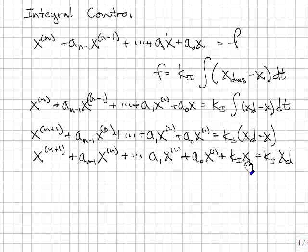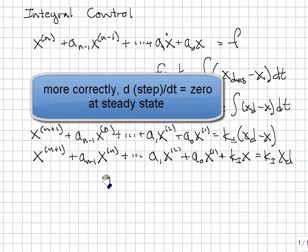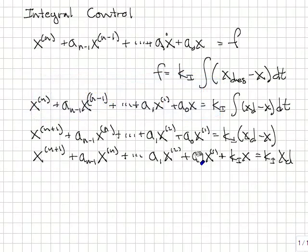Look what's happened. The original equation is now one order higher. So that when I put a step input in, all of these terms go to zero, because the derivative of a step is zero, and it's a linear system, so the form of the output will follow the form of the input. And I'm left with kix equals kix desired. Zero steady state error.